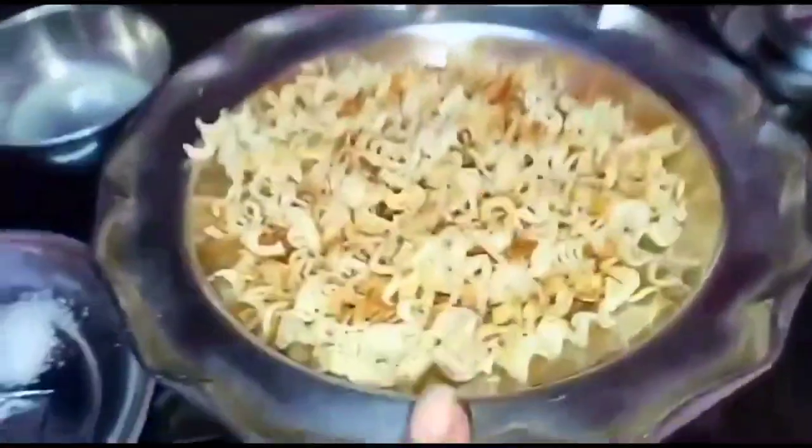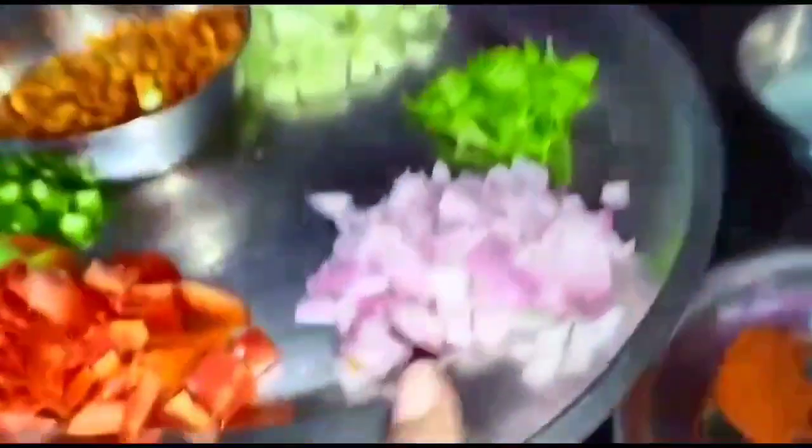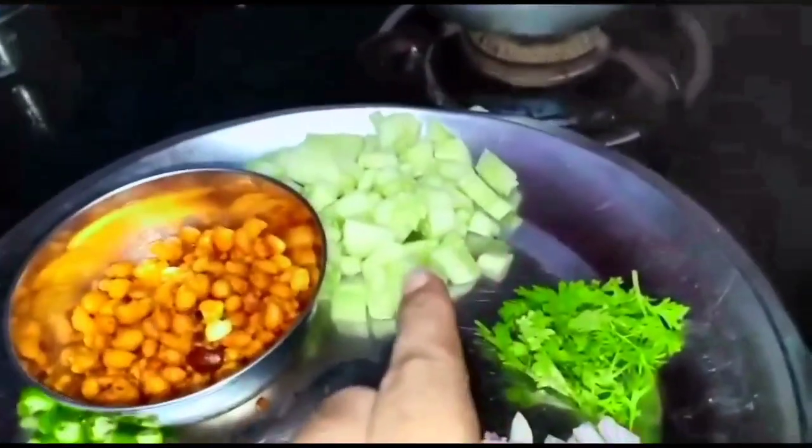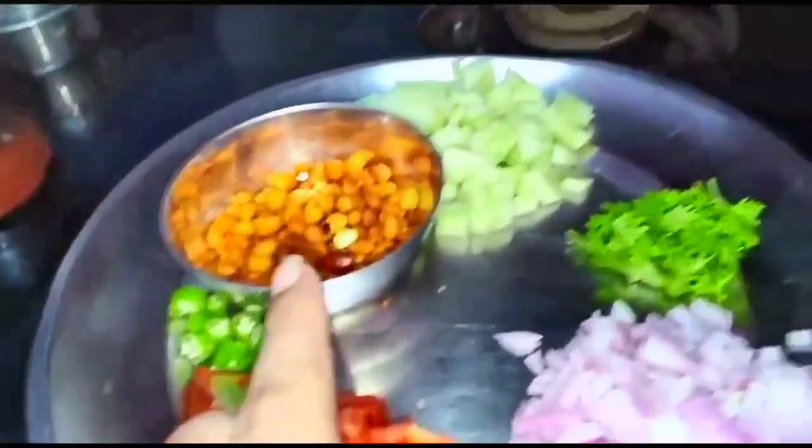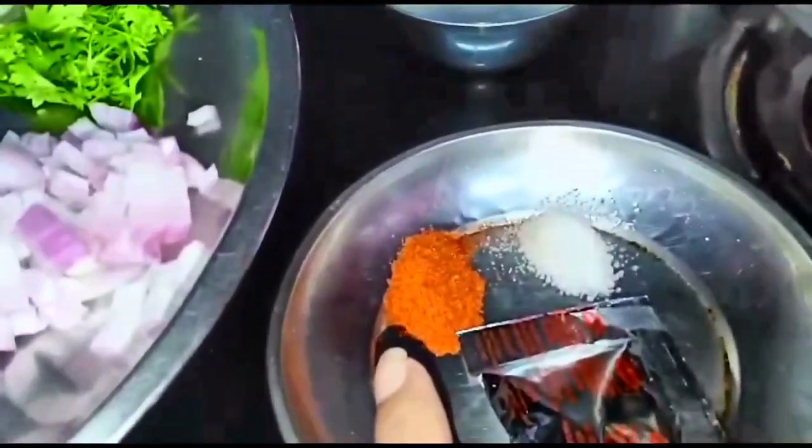Let's see how to prepare Maggi Bhel. Firstly, take roasted Maggi, finely chopped onion, tomato, green chili, coriander leaf, cucumber, and karabundi. Then next, leave salt, chili powder, Maggi masala, and lime juice.